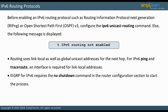EIGRP for IPv6 requires the no shutdown command in the router configuration section. Otherwise, the EIGRP process will not start. In the next slide, let us continue our discussion on IPv6 routing protocols.